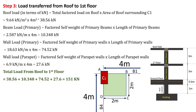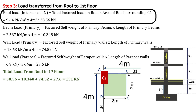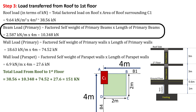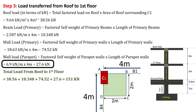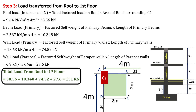Now let's calculate the load transferred from roof to first floor. Roof load = 9.64 kN/m² x 4 m² = 38.56 kN. Load due to primary beams = 2.587 x 4 = 10.348 kN. Load due to parapet wall = 6.9 kN/m x 4 m = 27.6 kN. The wall load is 74.52 kN. Hence, total load from roof to first floor = 38.56 + 10.348 + 74.52 + 27.6 = 151 kN.